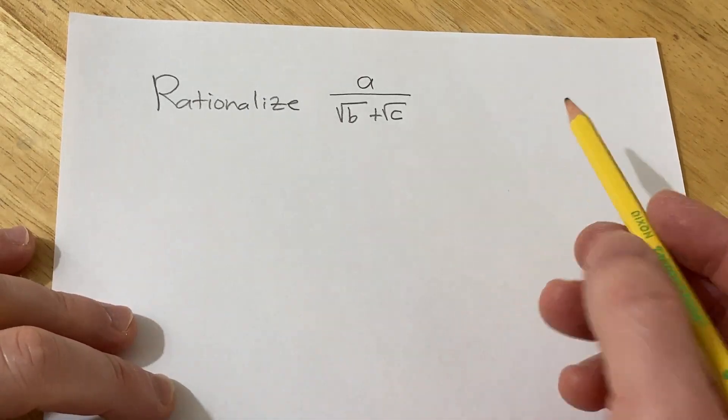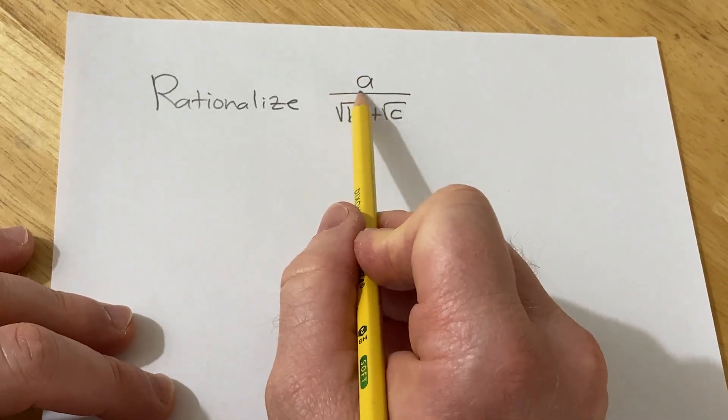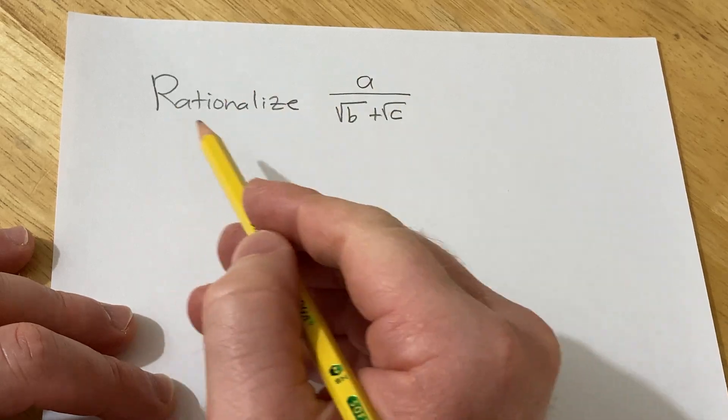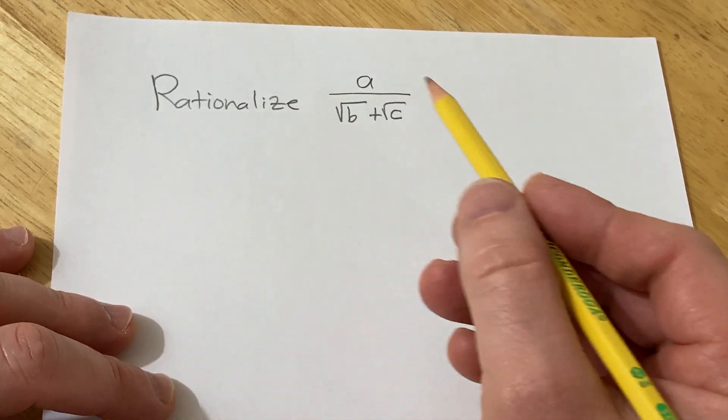Hi, in this short video I'm going to show you how to rationalize something that looks like this. So if you have a divided by the square root of b plus the square root of c, you can rationalize this pretty easily by multiplying by what's called the third conjugate.